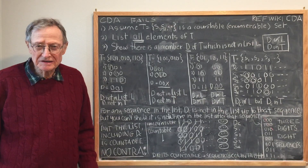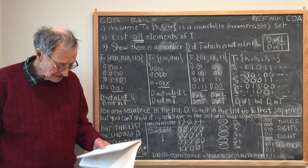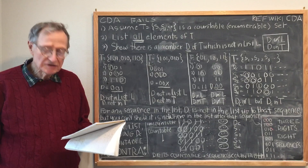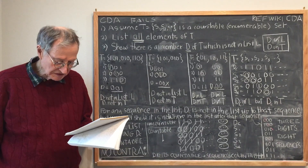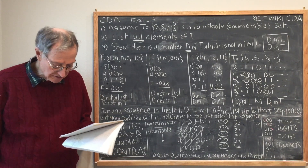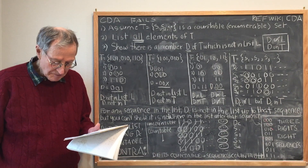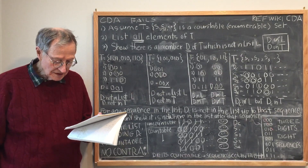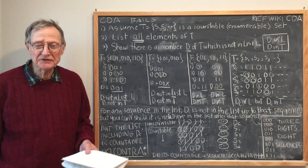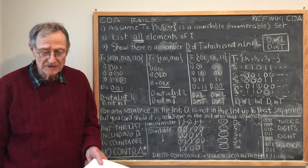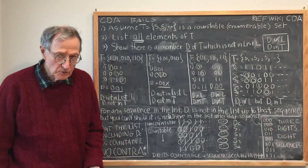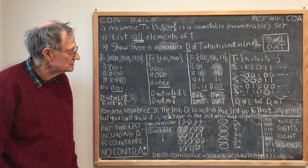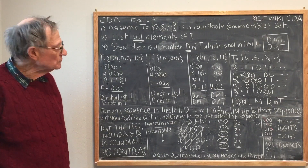Today I'm going to discuss Cantor's Diagonal Argument, which attempts to prove a set is uncountable by proving the assumption it is countable leads to a contradiction. And the way that proceeds is as follows.